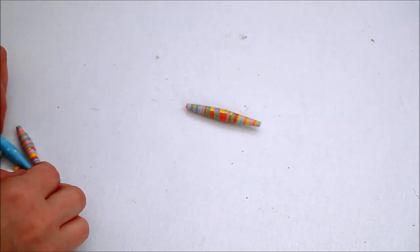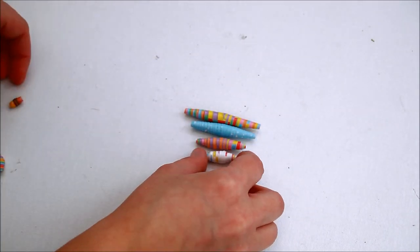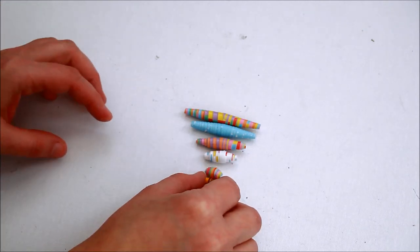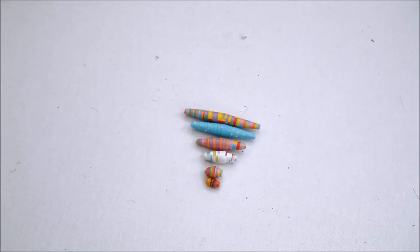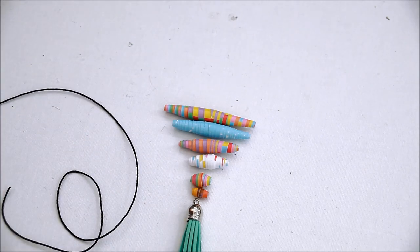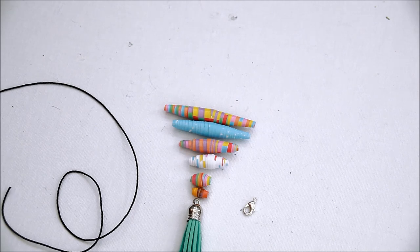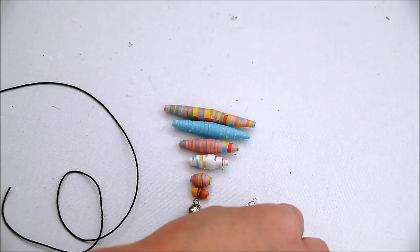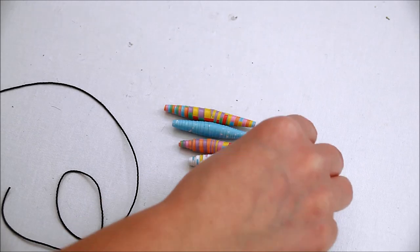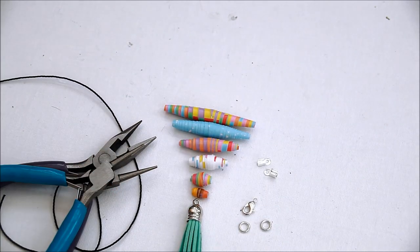Leave them to dry. Choose the beads you're going to use for your necklace. Add a tassel or anything you want. You're also going to need thread, some jewelry findings, and your pliers.